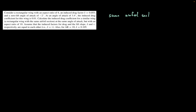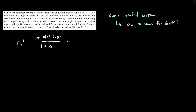Since both wings share the same airfoil section, A0 — the lift slope of the airfoil — is the same for both. We start by finding the coefficient of lift for the first wing: CL squared equals pi times the aspect ratio times the induced drag coefficient, divided by 1 plus delta. Plugging in AR=6, CDi=0.01, and 1 plus 0.055 equals 1.055, and taking the square root gives CL equal to 0.423.